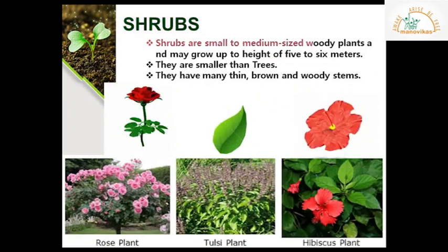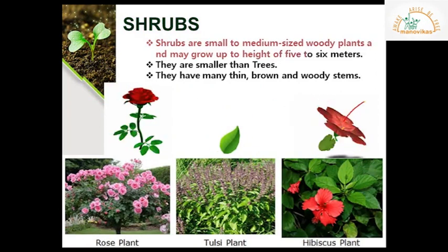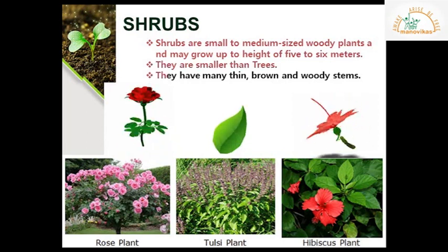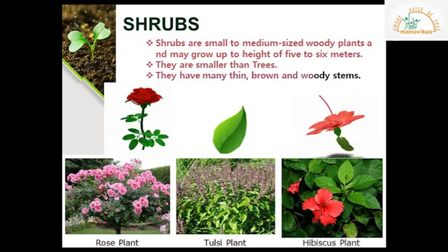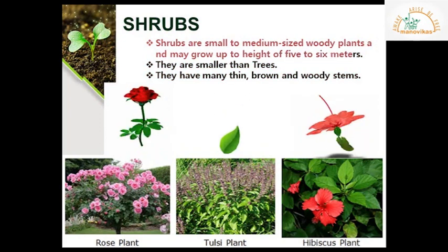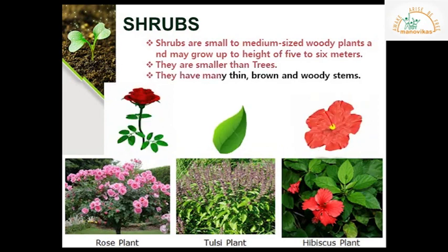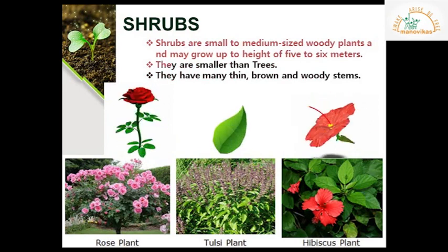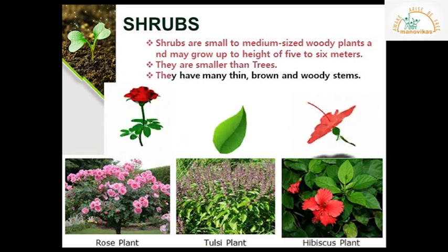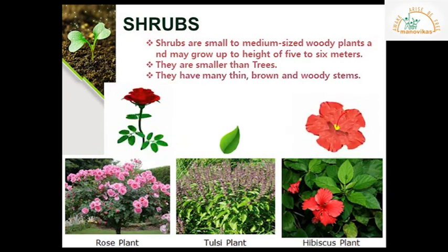Shrubs are small to medium-sized woody plants and may grow up to a height of five to six meters. They are smaller than trees and have many thin, brown, and woody stems. Examples include the rose plant, tulsi plant, and hibiscus plant.